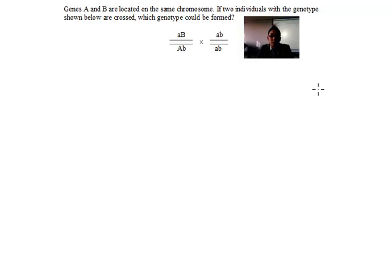What's happening kids, okay we've got a question here we're gonna try to solve together really quickly. Says genes A and B are located on the same chromosome. If two individuals with the genotype shown below are crossed, which genotype could be formed?